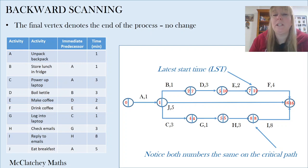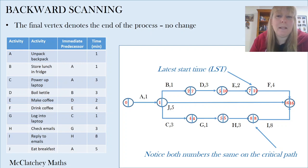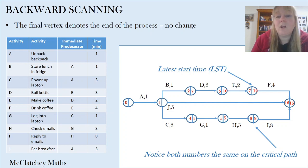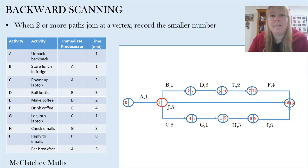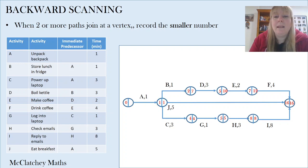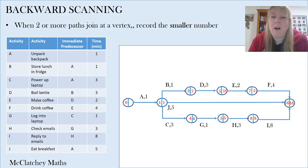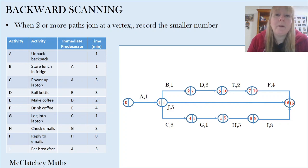Now I need to complete my remaining two vertices on the left-hand side. For the vertex just before activities B, J and C start, I need to make a decision. Moving across the top, activity B gives me 7 take away 1 minute equals 6. Or 16 take away 5 for activity J gives me 11 minutes. Or from the bottom activities, 4 take away 3 gives me 1 minute. I always choose the smallest amount, which is of course 1 minute. That makes sense because A, J, C, G, H, I is my whole critical pathway, so at this decision point I could have written 1 straight in, knowing it's on the critical path. The starting vertex is 0 — that does not change.